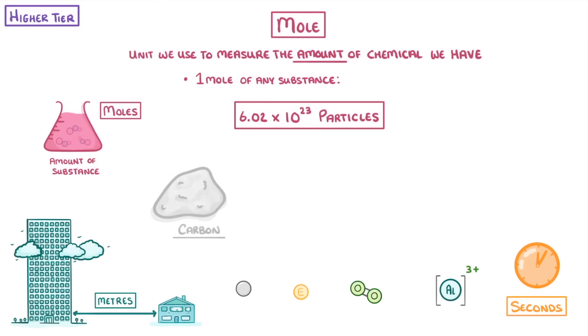So if we had a little pile of carbon and we were told that it contained exactly one mole of carbon, then there must be 6.02 times 10 to the 23 atoms of carbon in that pile. We call this number Avogadro's constant.